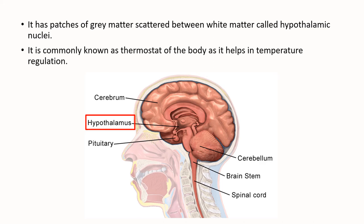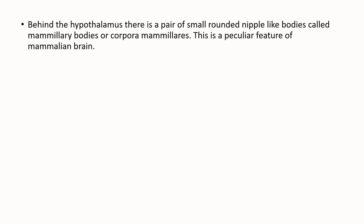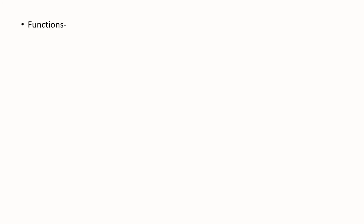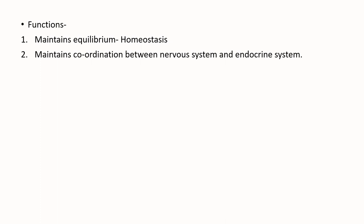Hypothalamus is commonly known as the thermostat of the body, as it helps in temperature regulation. Behind the hypothalamus, there is a pair of small rounded nipple-like bodies called mammillary bodies, or the corpora mamillares. Presence of these bodies is a peculiar feature of the mammalian brain. The hypothalamus functions to maintain equilibrium, that is, homeostasis. It also maintains coordination between the nervous system and the endocrine system. Hypothalamus also secretes neurohormones, which influence the pituitary gland.